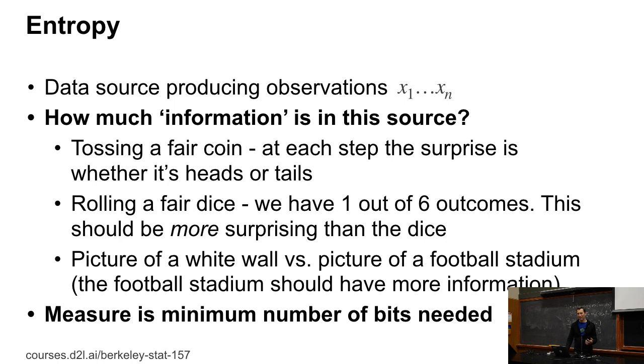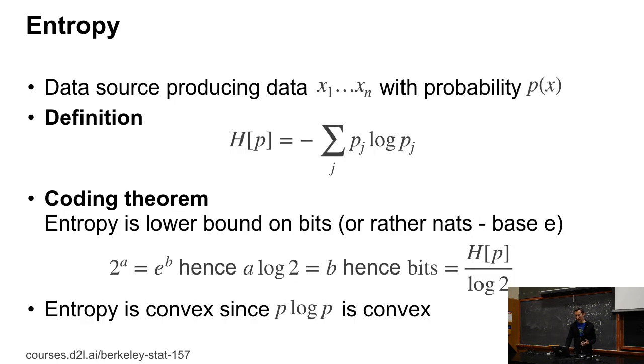And the nice way that Shannon formulated this is by saying, well, the entropy is the minimum number of bits that are needed to store this. Now, how do we formalize this? This is the ingenious definition of Shannon's. Namely, he defined the entropy H of P to be minus the sum over all outcomes j, P_j times log of P_j.